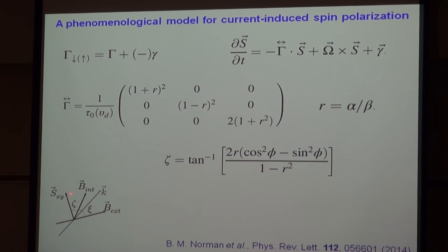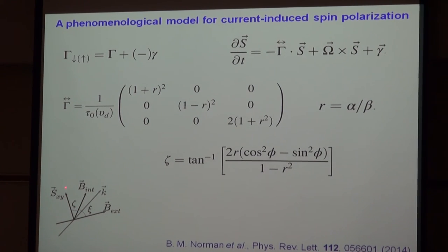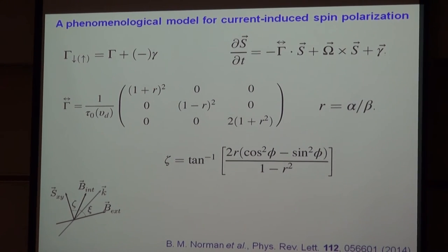Working through this, we find there will be some angle of deviation between the steady-state spin polarization direction and the direction along which spins are generated. This has always been a puzzle for current-induced spin polarization — it appears to be generated along the direction of the internal field as opposed to the vector sum of the internal field and the applied magnetic field. Because the spin relaxation is anisotropic, we can end up with a steady-state spin polarization that's not along the direction of spin generation.